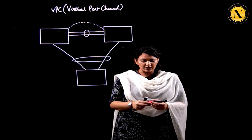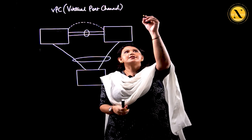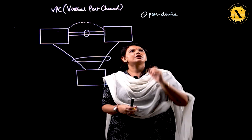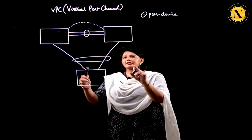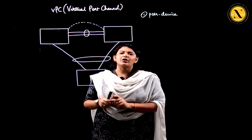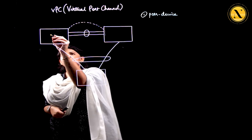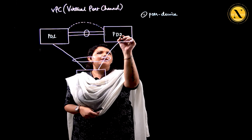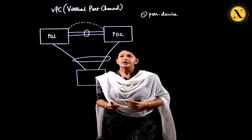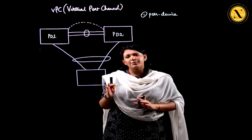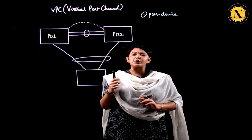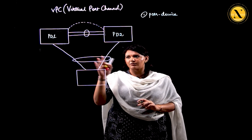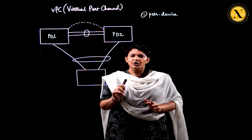The first terminology is peer device. Peer devices are these two devices between which we are going to be configuring VPC. I'm going to call this peer device 1 and this peer device 2. It is on these devices that we enable the feature of VPC and put the VPC configurations. You cannot use more than two peer devices in one domain — a maximum of two peer devices only.